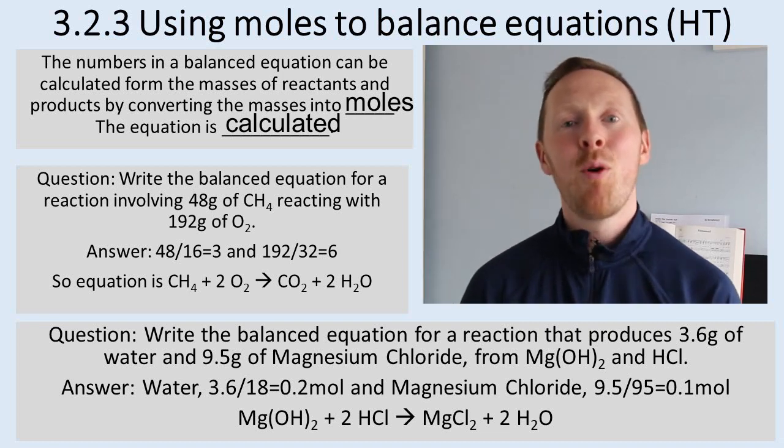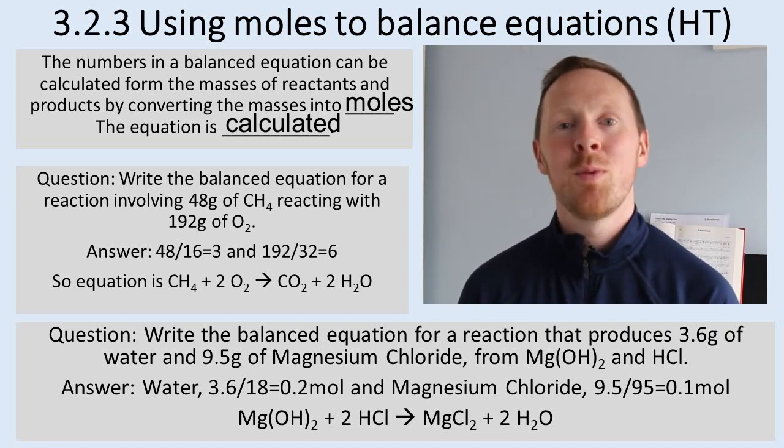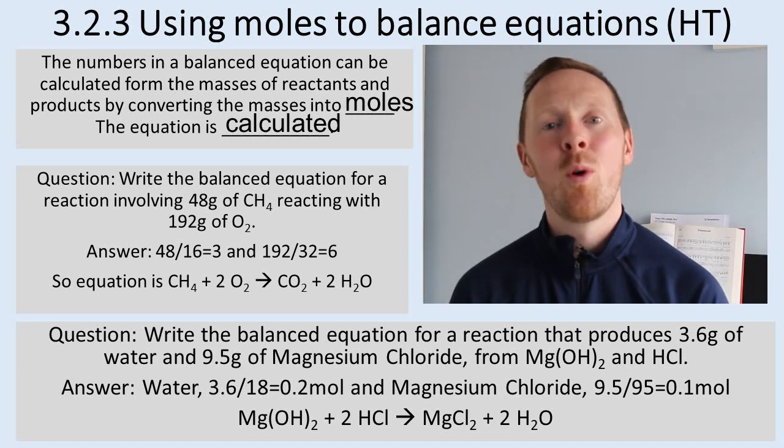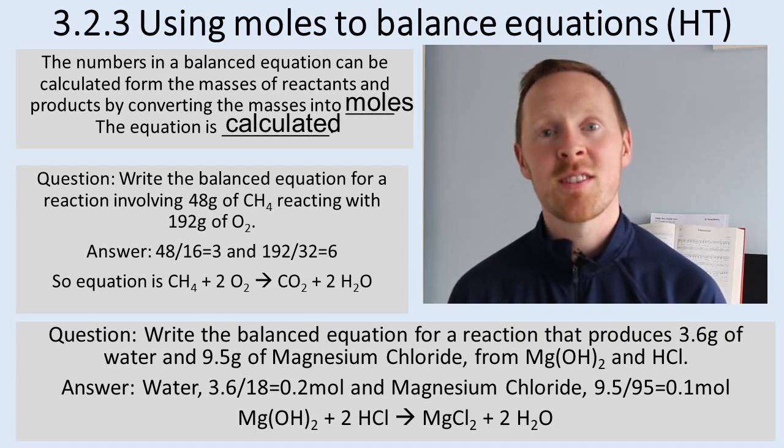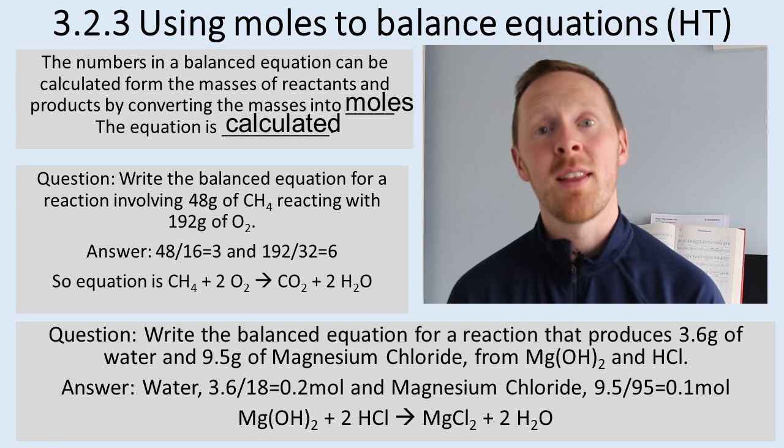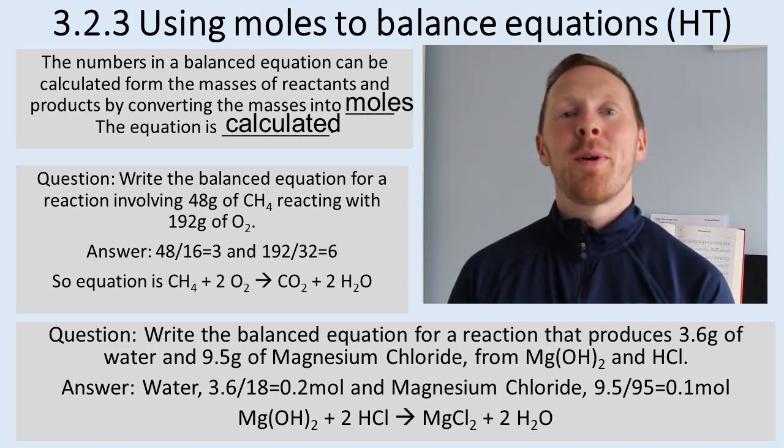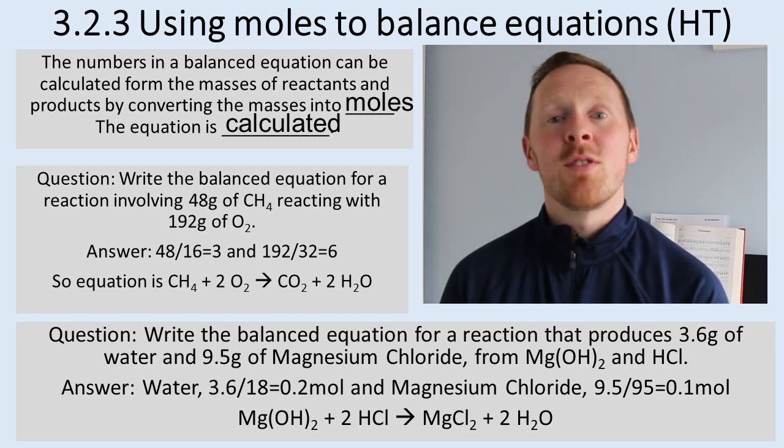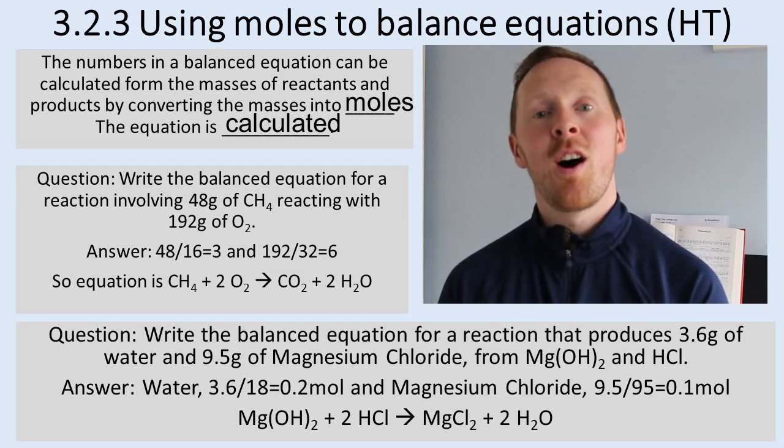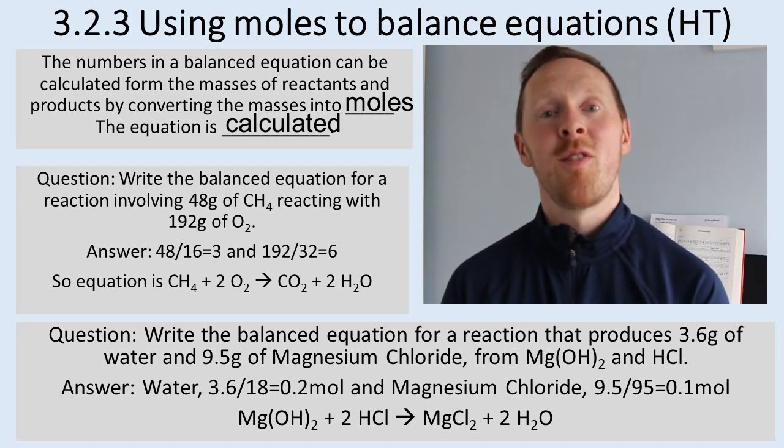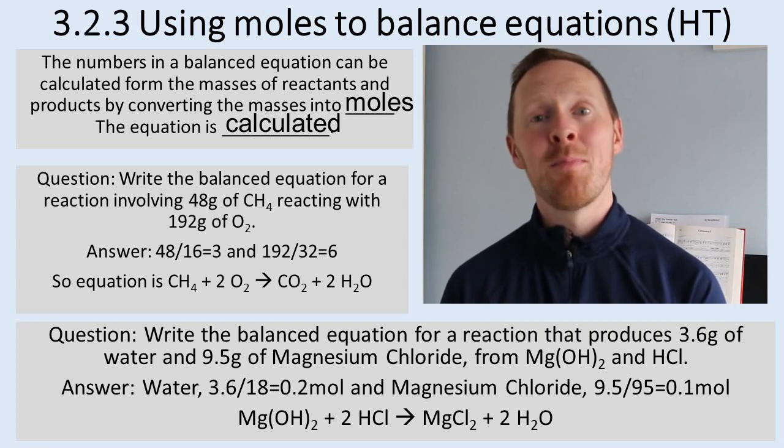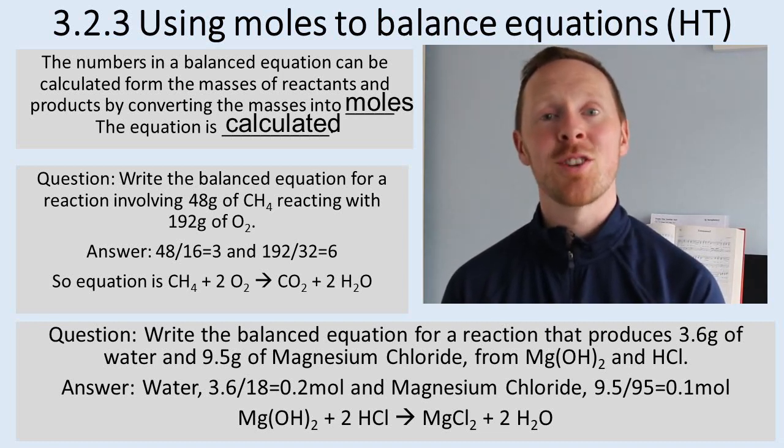First of all you need to work out how many moles you've got of water present. Well the molecular formula of water is 18: oxygen is 16, hydrogen is 1 and there's 2 hydrogen atoms. So 3.6 grams divided by 18 gives you 0.2 moles of water formed.